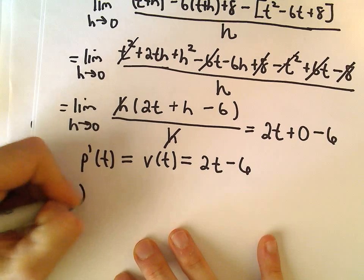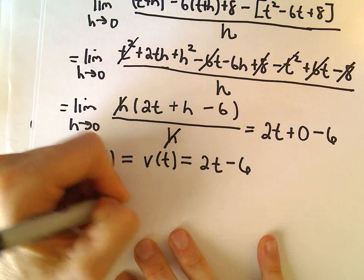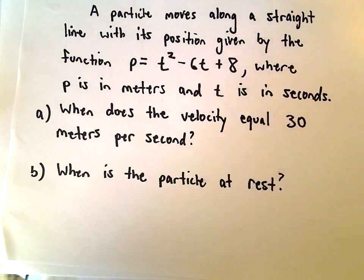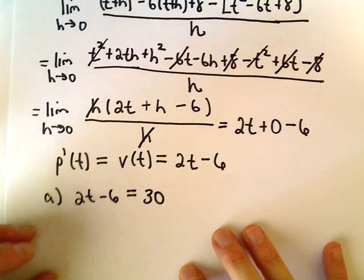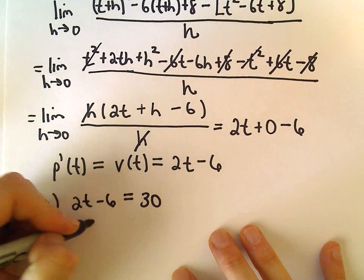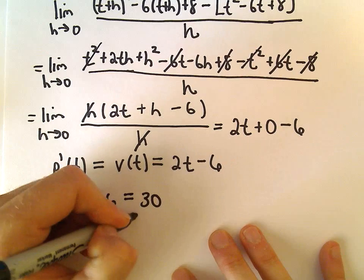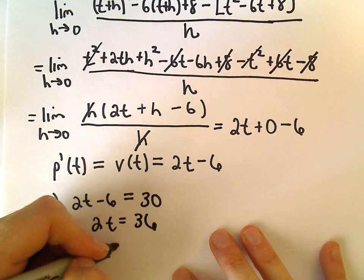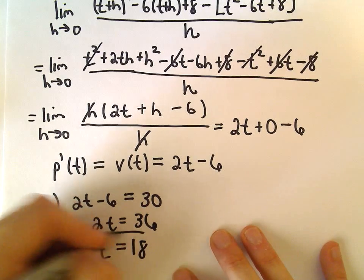So part a, we'll just take our velocity function and set that equal to 30. And now, all we have to do is just solve for t, so we can add 6 to both sides. That'll give us 2t equals 36, and then we can divide both sides by 2, and we'll get t equals 18.